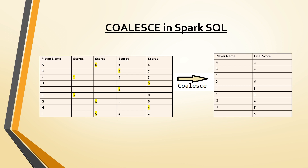Let's say there is a requirement to get the first non-null value of each column. In any other coding language, or even without the coalesce function, how would you do that? For each available column, you would first have to check whether the value is null or not for each and every field of each person. This becomes very complex, requiring a lot of lines of code to perform this requirement.